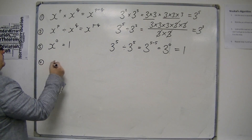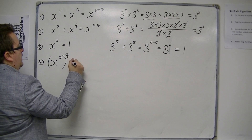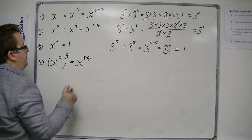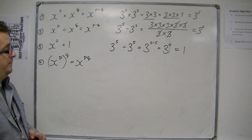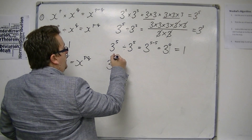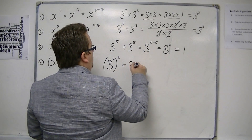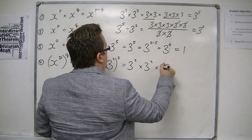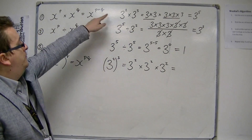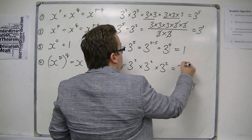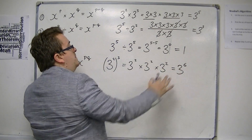Another rule says that if you've got x to the p and then you put it to the power of q, then this is x to the p times q — so the indices multiply together. An example of that is 3 squared, all cubed. This means 3 squared times 3 squared times 3 squared, and using our first rule, that is 3 to the 2 plus 2 plus 2, which is 6. So 2 times 3 makes the 6.